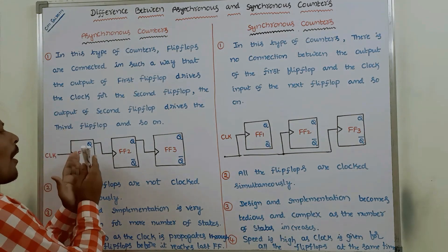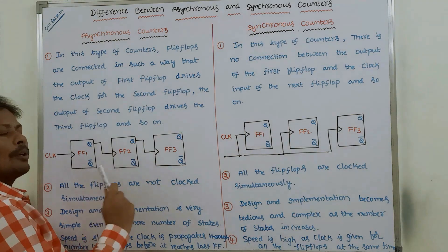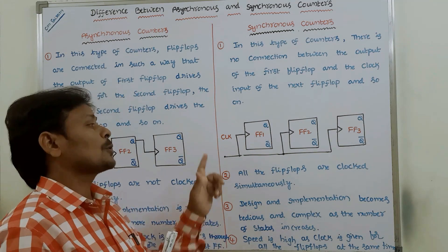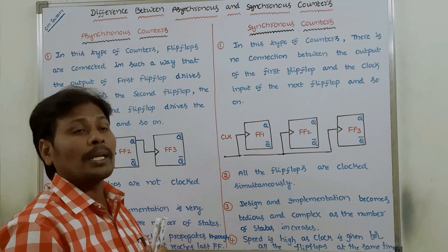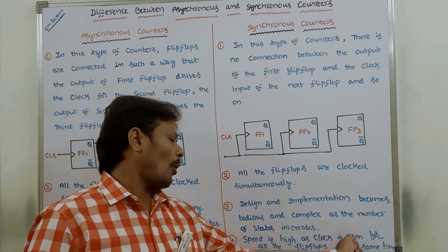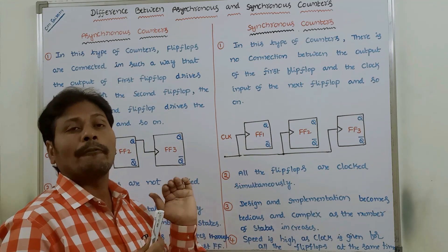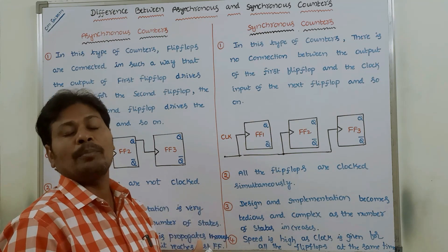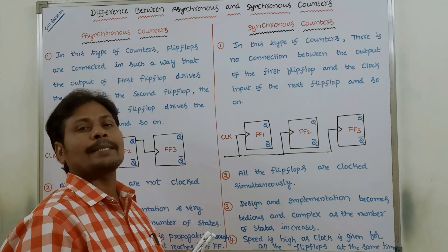In synchronous counters, speed is high because the same clock pulse is applied to all the flip-flops at the same time. All the flip-flops operate simultaneously, so the operation can be done very quickly. In asynchronous counters, the current flip-flop depends on the previous one, causing more propagation delay and slower speed.